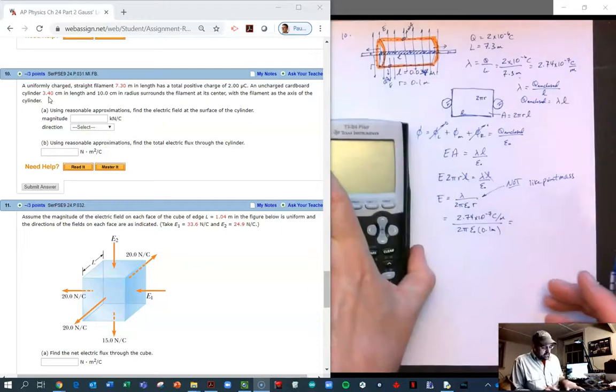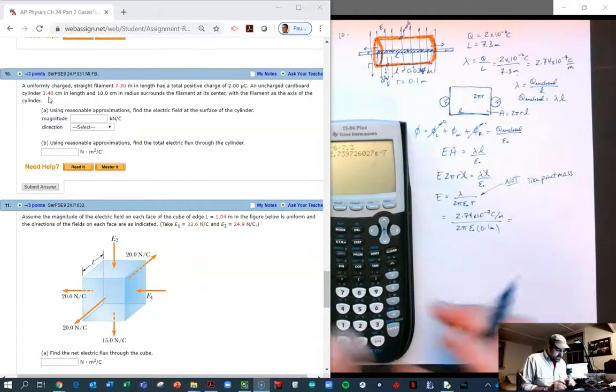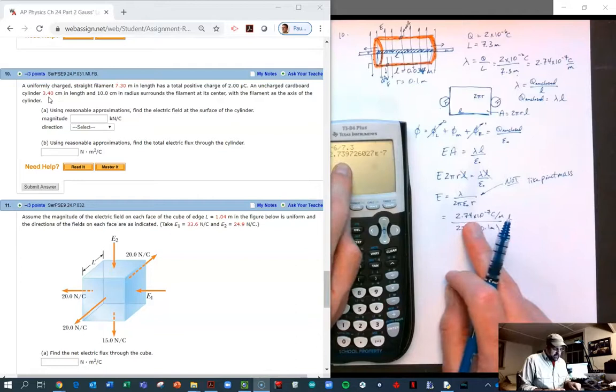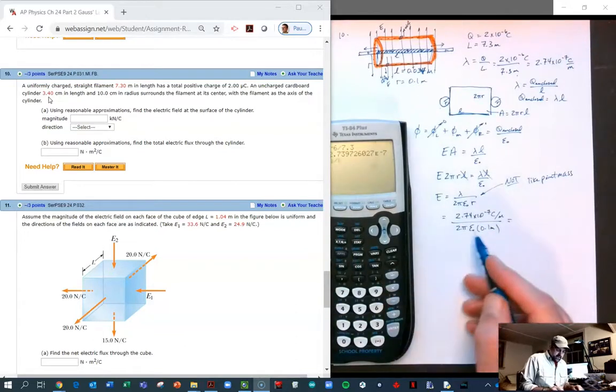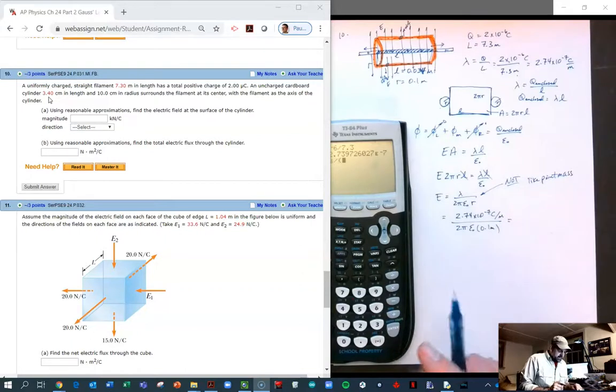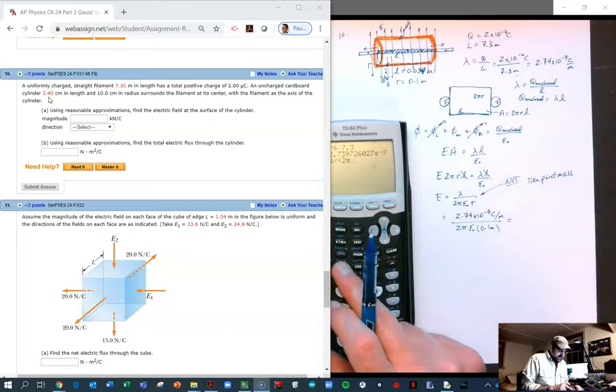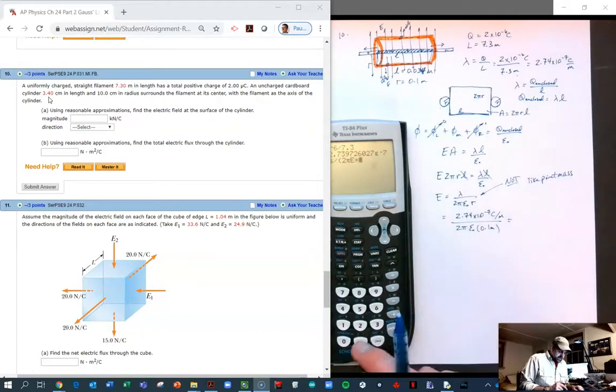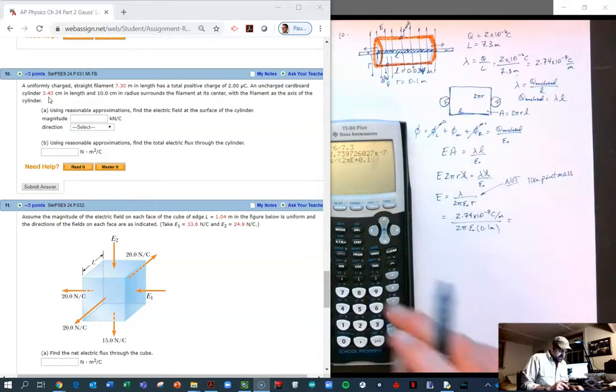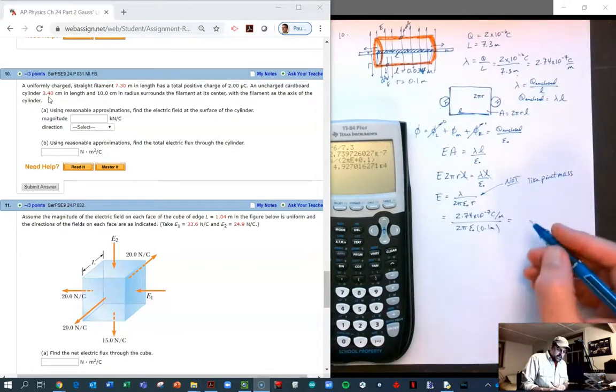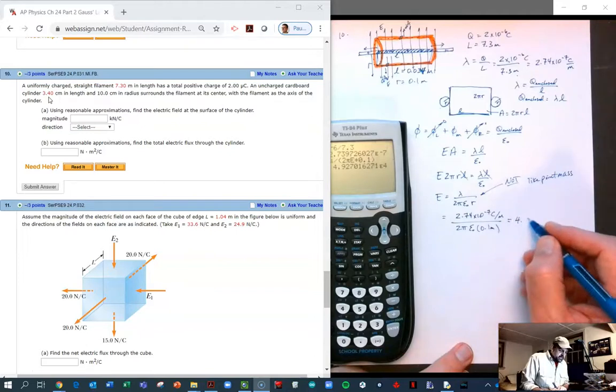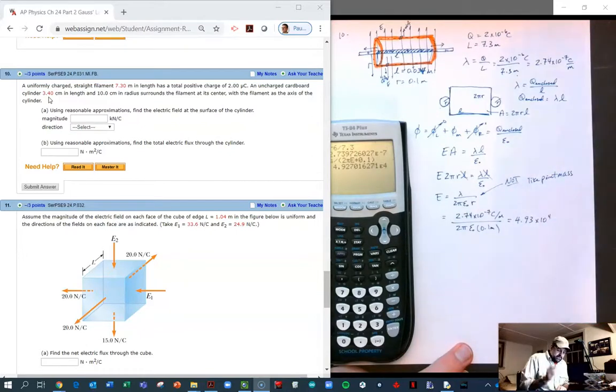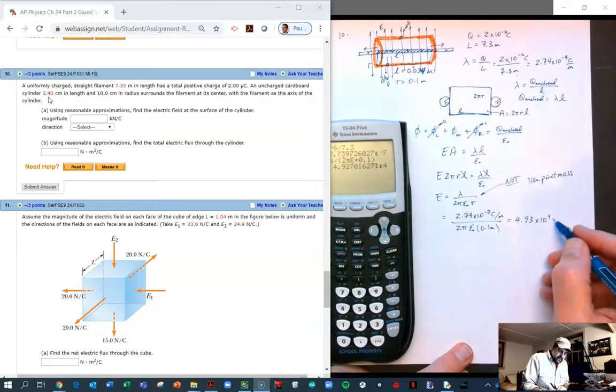2π epsilon naught—that's just a constant—and the radius here is the radius of our Gaussian surface, and our r is 0.1 meters. You can watch me type it in if you want to. We can just use the lambda from the time before, so we're just going to divide that by all of this here. Don't forget parentheses: 2π epsilon naught times 0.1, and again it's not squared.